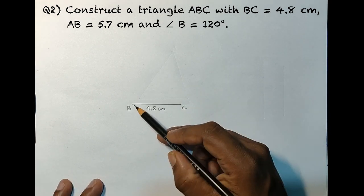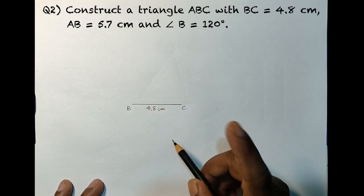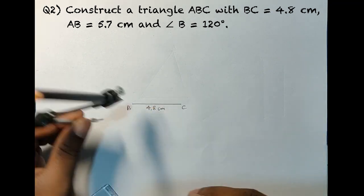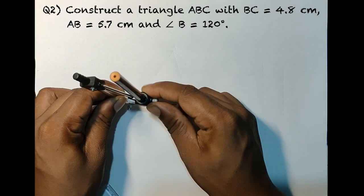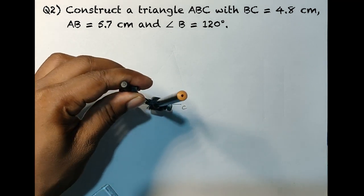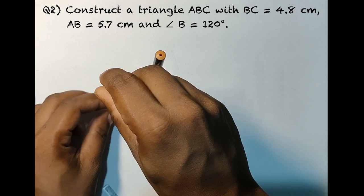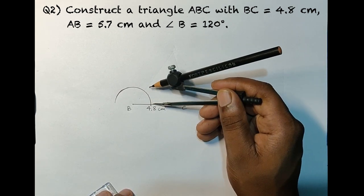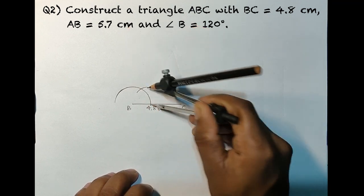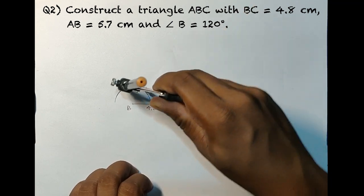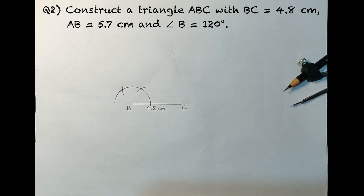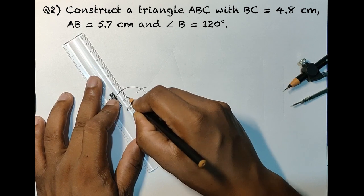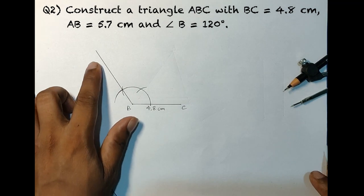We have got the base BC ready. Now we need to draw AB at angle B, so let's construct angle B using the compass. You all know how to construct 120 degrees — take any appropriate radius and cut an arc. From that point, let's cut another arc and double 60 degrees, which becomes 120 degrees. Using point B and the point obtained above, align and draw the line. This is your 120-degree angle B.